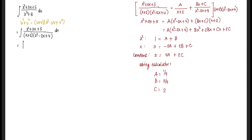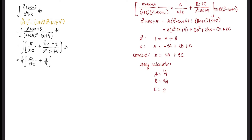The integral becomes the integral of one-fourth over x plus 2 plus three-fourths x plus 2 over x squared minus 2x plus 4, all dx. We then separate these into two integrals: one-fourth times the integral of dx over x plus 2, plus three-fourths times the integral of x over x squared minus 2x plus 4 dx.